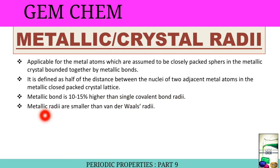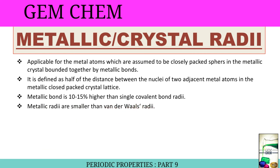Metallic radii are smaller than van der Waals radii. This is because the bonding forces in a metal crystal are much stronger than van der Waals forces.